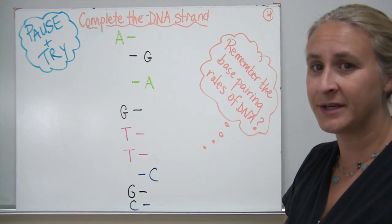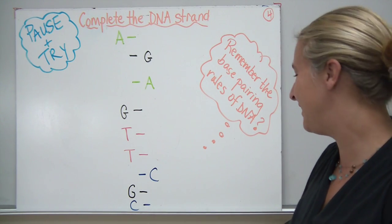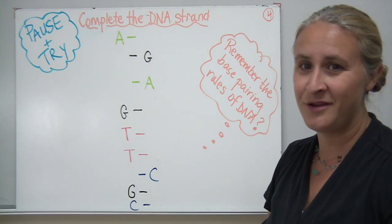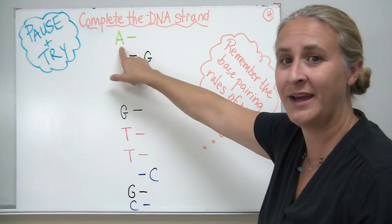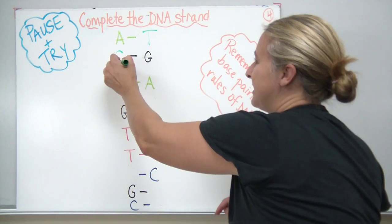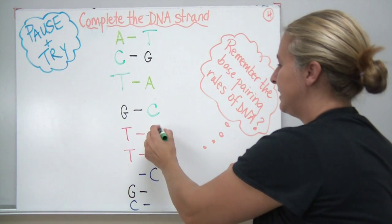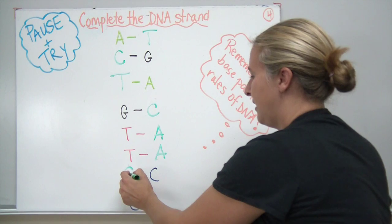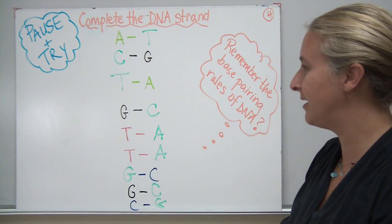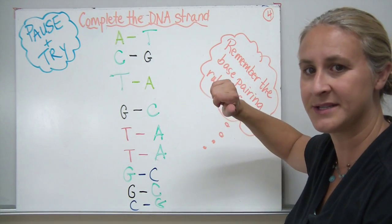Let's pause and try to complete the DNA strand yourself — see if you can remember the base pairing rules. If not, go back and look in your notes. Now let's see how you did. So on this side I had an A, so I'm going to pair a T with that. On the opposite side we had a G, so I'll place a C. An A pairs with a T, a G with a C, T with an A, T with an A, a G with my C, a G with a C, and my C with a G. If you struggled with that, please come in to class — we'll do some more practice.